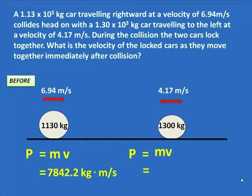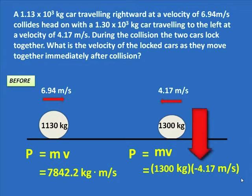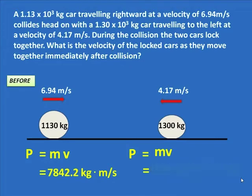The momentum of the second car is 1300 times 4.17, and notice the negative sign. The velocity is to the left, so it's negative. It is so important to get that right. The momentum then is to the left — 5421 kilogram meters per second.